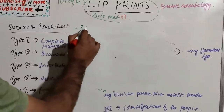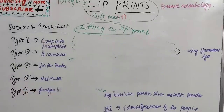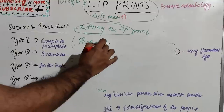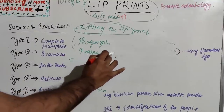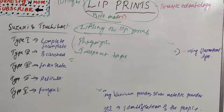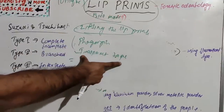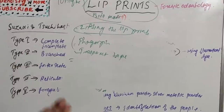After developing the lip prints, the next step is lifting them. This can be done by two methods: the photographic method and the transparent tape method. In the photographic method, the developed print should always be photographed using a fixed-focus or variable-zoom camera with a measuring scale. In the transparent tape method, the powder-dusted lip prints are lifted with transparent tape from a liquid or hard surface.